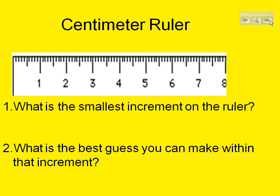What is the best guess you can make within that increment? That best guess is about a tenth of your smallest increment. So if your smallest increment was 1 millimeter, your best guess is to a tenth of a millimeter. If your smallest increment was a tenth of a centimeter, your best guess will be to a hundredth of a centimeter.